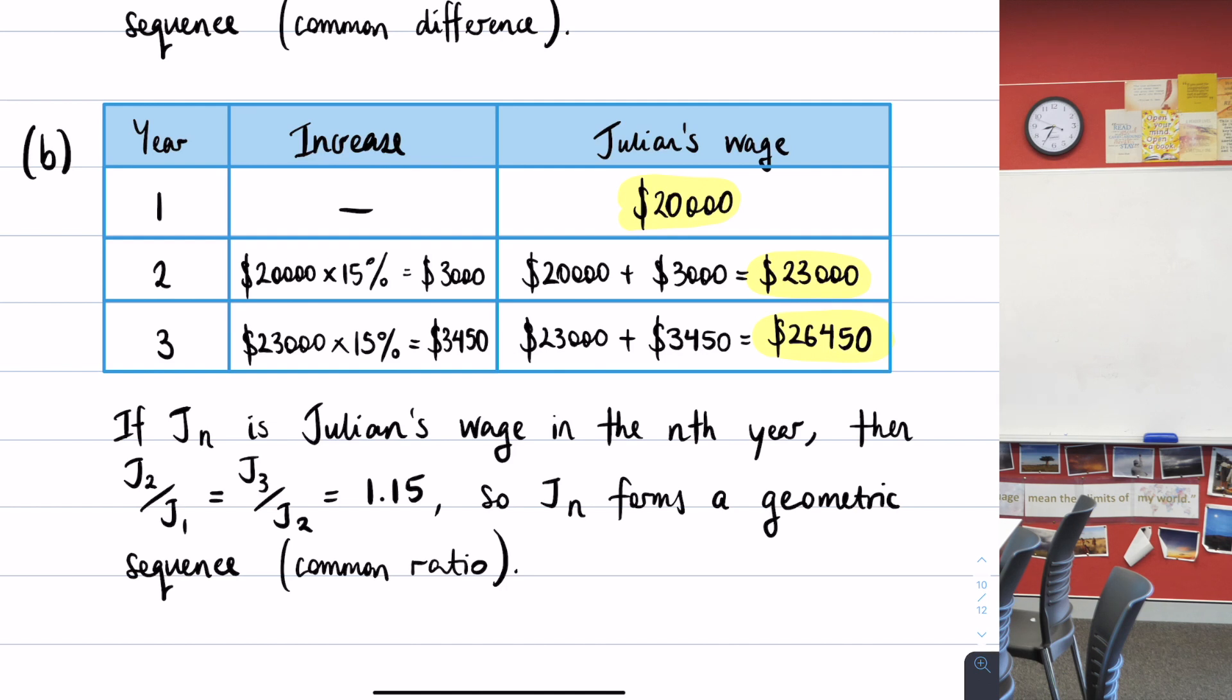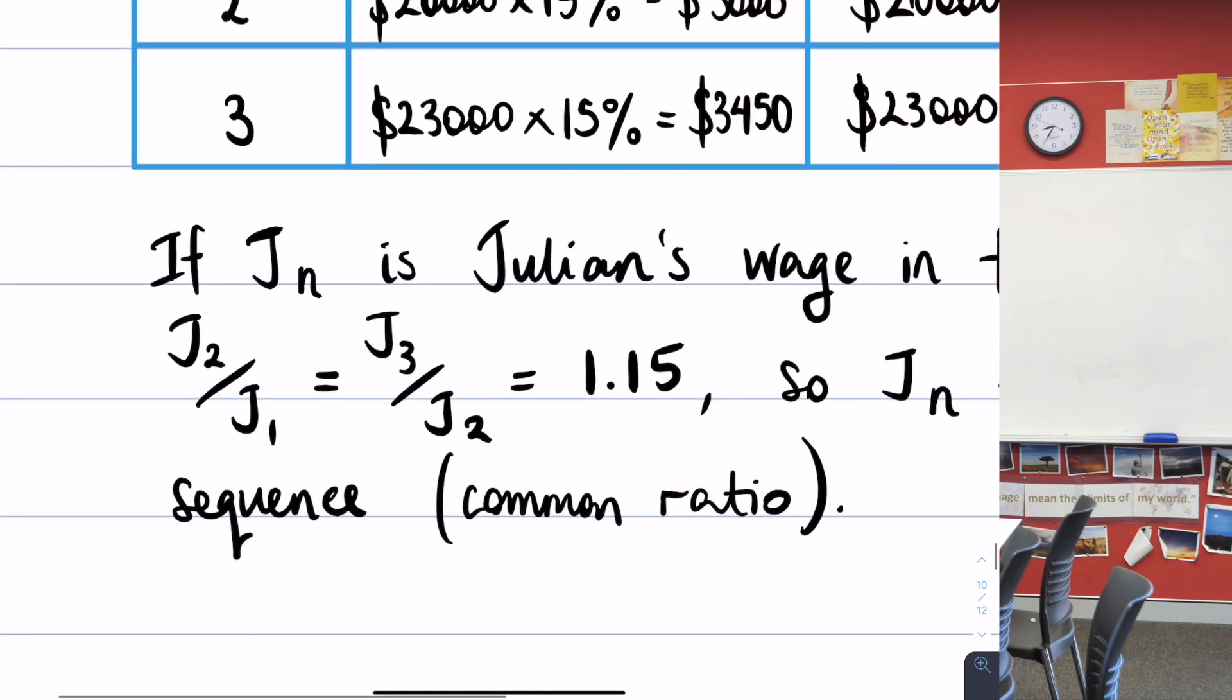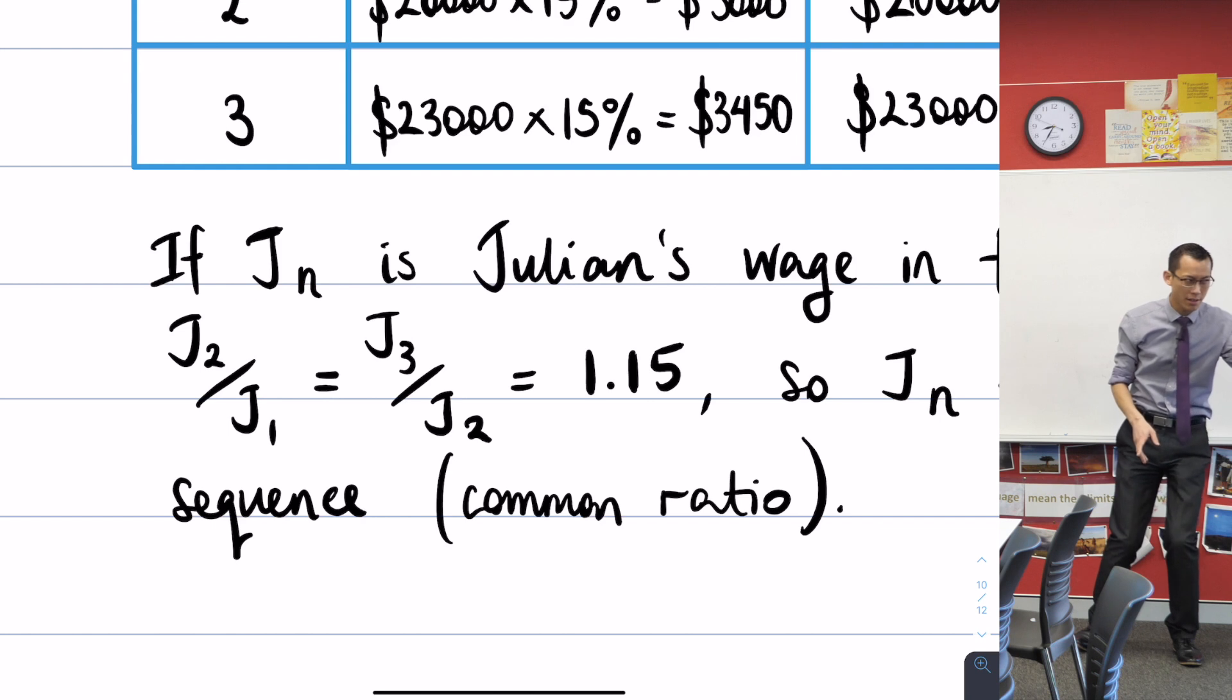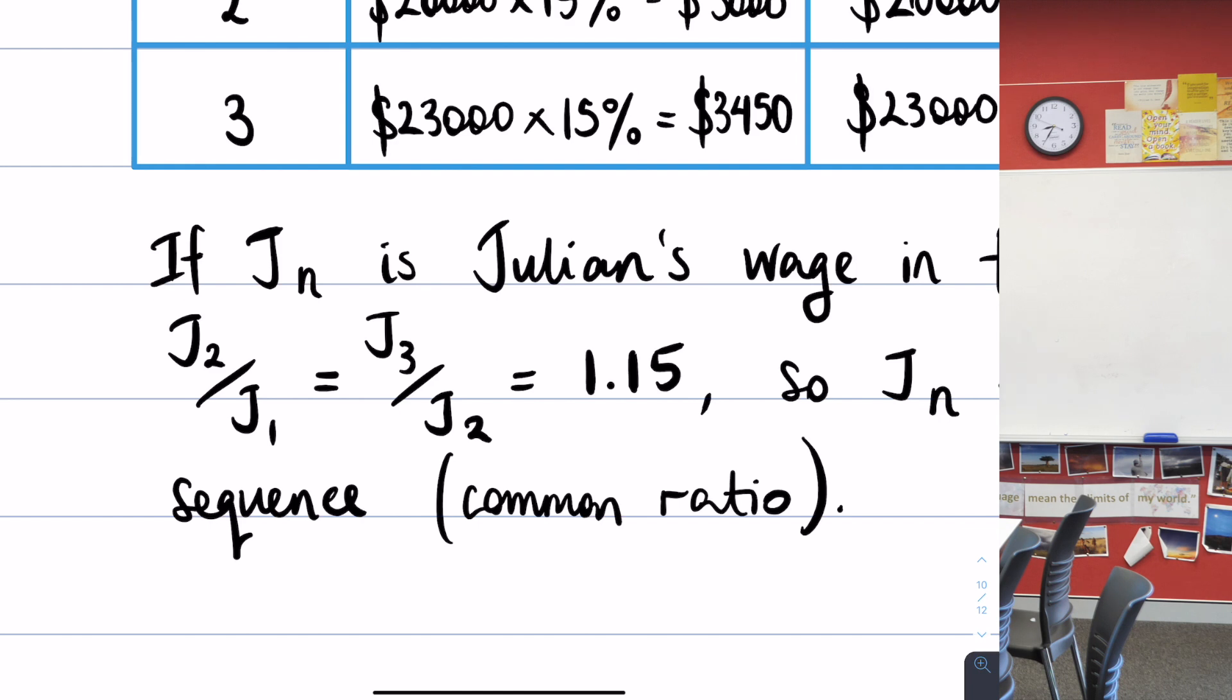Now it's very important that you do show, I'll highlight it right down here, you do show this result that proves that it's a GP, right? You've got your division from one term to the next one, and you have to do it for all of them, right? So it's not a common difference, it's a common ratio, right? And you get 1.15, not 0.15, because otherwise it wouldn't be increasing from year to year.